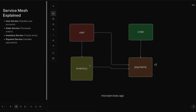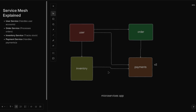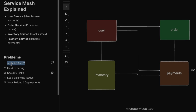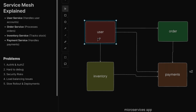For the e-commerce application to work properly, these microservices need to communicate with each other — for example, user service talking to inventory or order service. Microservices architecture is good for scaling but comes with problems. The first problem is authentication and authorization: every microservice needs to handle logins and permissions separately, and you need to add that code inside every microservice, which is a repetitive task.